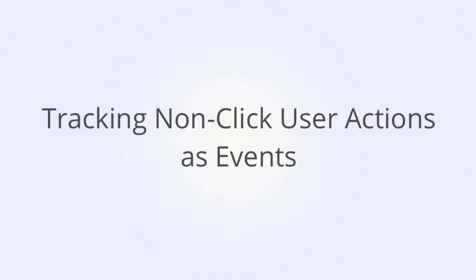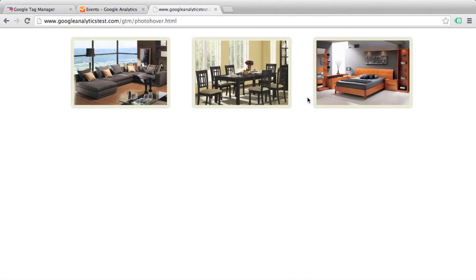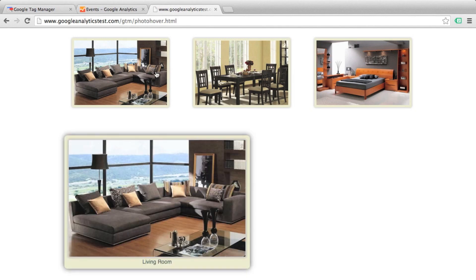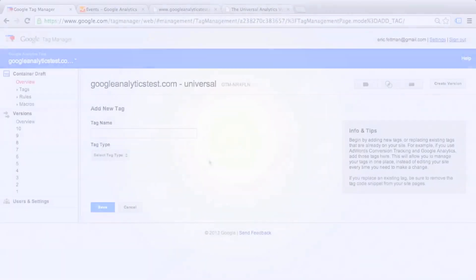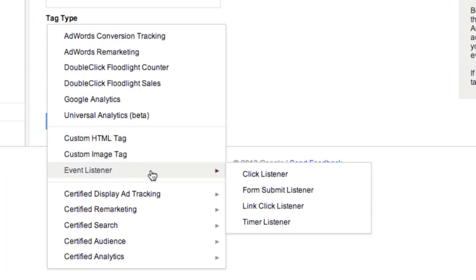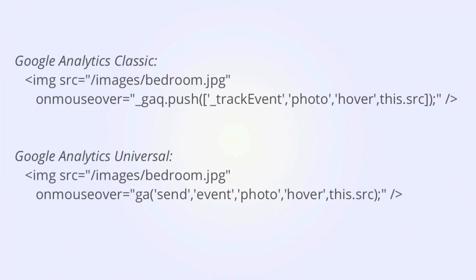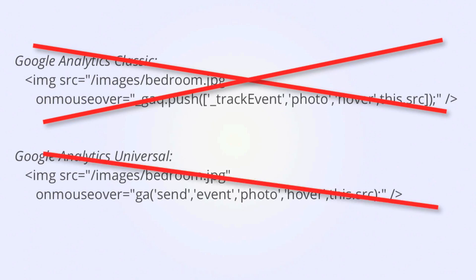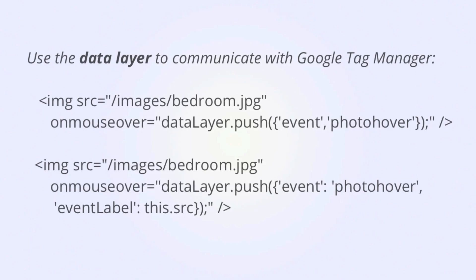What if you want to track a user action other than a click as a Google Analytics event? This is going to require a little bit of manual coding on your web page to tie into Google Tag Manager. Let's say on your website visitors can hover over pictures to display a larger pop-up — you may want to track these hover actions as events in Google Analytics. However, in Google Tag Manager there is no option for creating a hover event listener the same way we created a link click listener. So we are going to need to manually code our event. But we need to remember that we no longer have the Google Analytics tracking code on the page directly — we have the Google Tag Manager container. So we can't use the regular coding for Google Analytics Classic or Universal that we would normally use for event tracking.